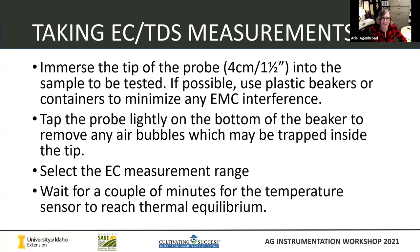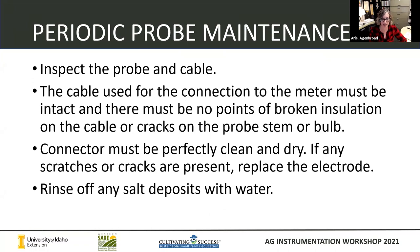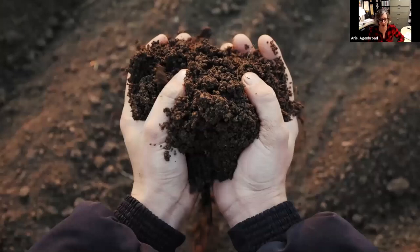For taking an EC measurement, it's very similar. You don't have to calibrate; however, you just want to start with a clean container, and if you can use plastic it's going to minimize any salt or electrical interference. Tap the probe lightly on the bottom of the beaker to remove any air bubbles, select the EC measurement range on your meter, and then wait a couple of minutes for the temperature sensor to reach equilibrium. To take care of your probe in the future: regularly inspect your probe and cable, make sure everything is intact with no cracks. The probe stem has glass inside, so you want to make sure that stays protected. The connector needs to be perfectly clean and dry, and if you get any scratches or cracks, replace the electrode.